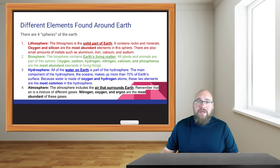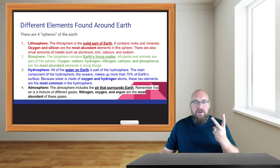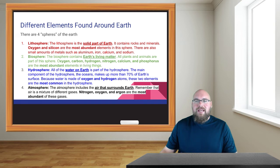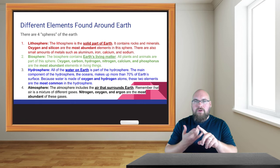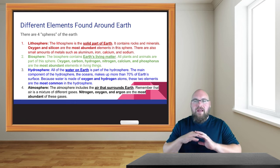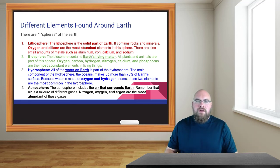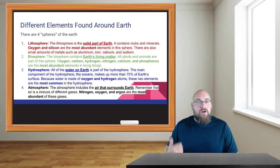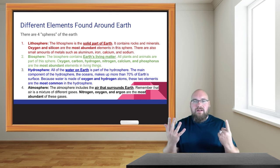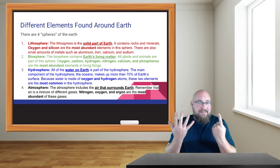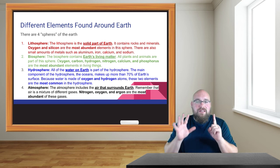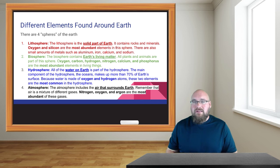The biosphere is the second sphere of Earth — there are four total. The biosphere contains all living things: grass, trees, birds, us, dogs, cats, bacteria, everything considered alive. The most abundant elements found in living things are oxygen, carbon, hydrogen, nitrogen, calcium, and phosphorus. Those six are the most common elements we find in the biosphere, though there are more.